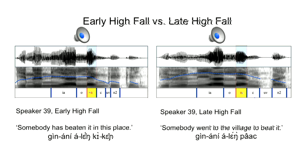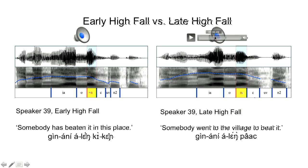This is an early high fall — 'somebody has beaten it in this place.' And this is the late high fall — 'somebody went to the village to beat it.' You can make out the yellow highlighted region, marked N for the vowel nucleus of that syllable. You can see the fall is indeed happening earlier in the syllable for the early high fall than for the late high fall.